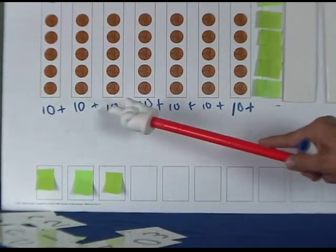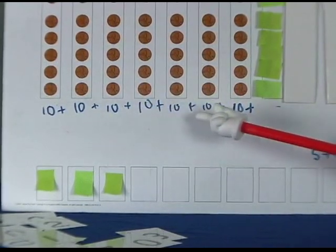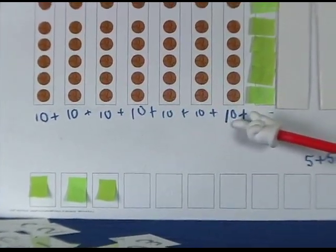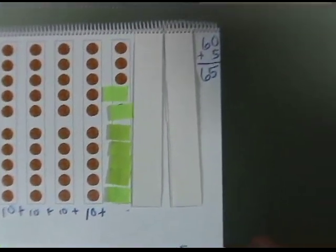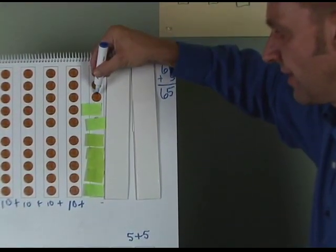10, 20, 30, 40, 50, 60, 70. And how many pennies do I have? 1, 2, 3.